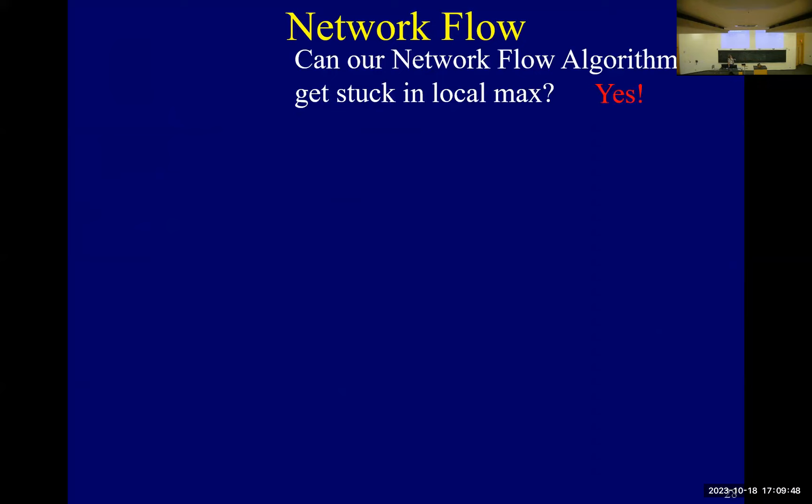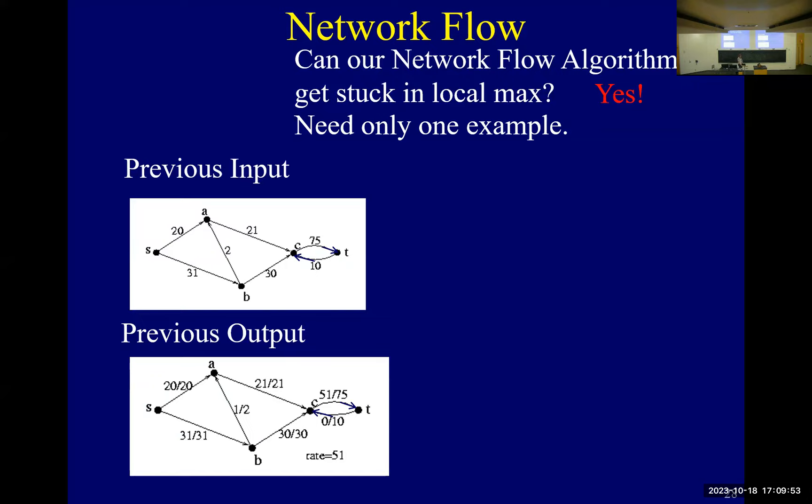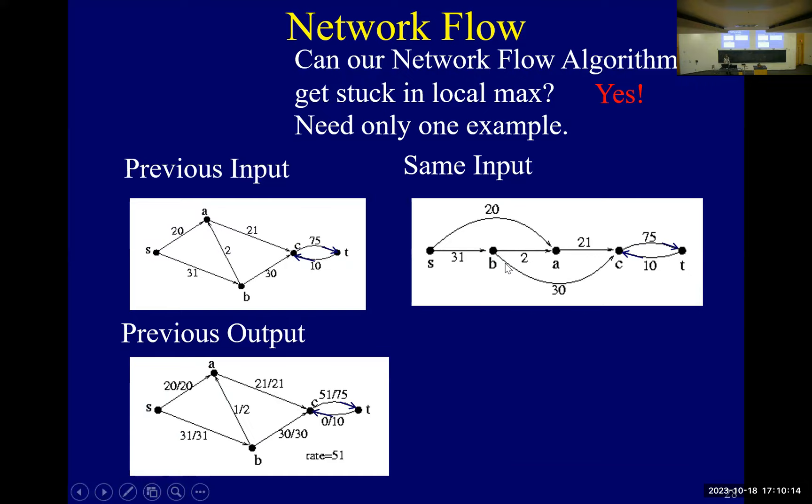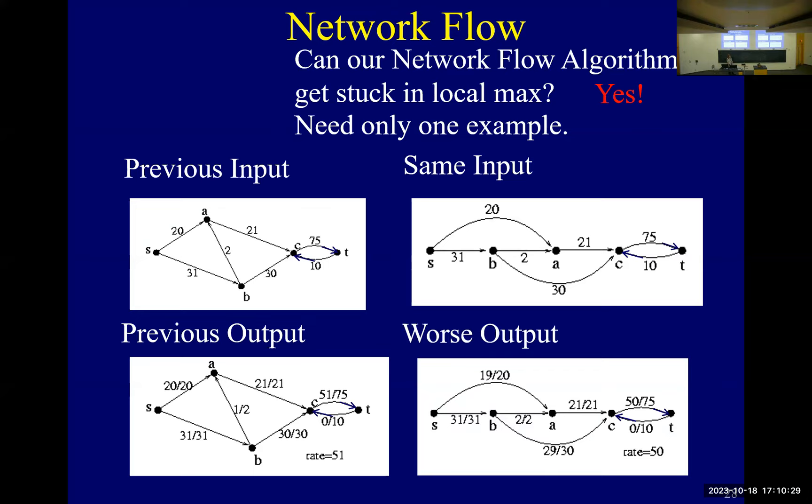To prove that the algorithm doesn't work, you just have to come up with one counter example. So, remember, this is the example where we got, we were happy with max flow of a flow of 51. And what's this graph here? It looks very different than this graph. But if you pay attention, it's the same graph, I just moved the nodes around. And why did I do that? Because I wanted to. We're going to follow the algorithm again, and we're going to get stuck without the maximum flow.